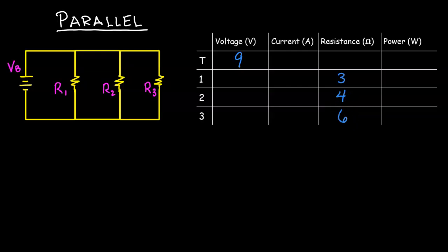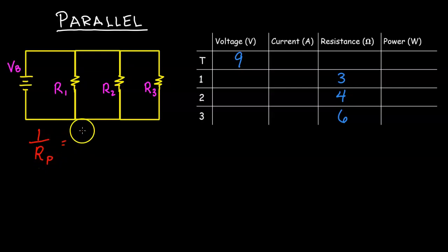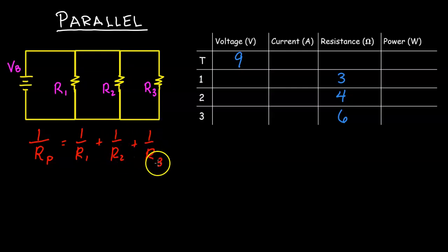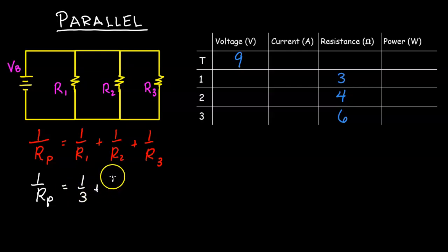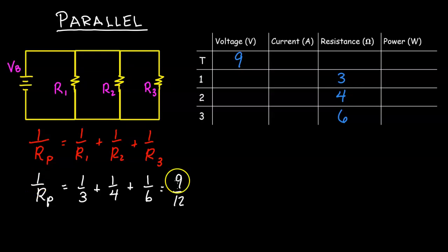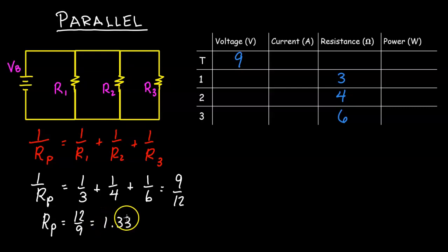The first thing is to calculate the equivalent resistance, which I'll call Rp for parallel. The equation is: 1 over Rp equals 1 over R1 plus 1 over R2 plus 1 over R3. Substituting: 1/3 plus 1/4 plus 1/6 equals 9/12. Flipping the fraction gives Rp equals 12/9, which is approximately 1.33 ohms.